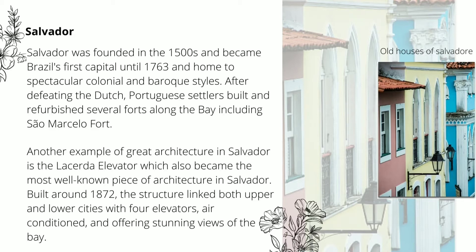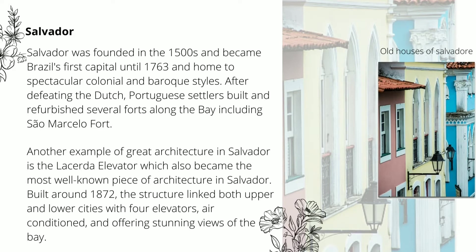After defeating the Dutch in the 17th century, Portuguese settlers built and refurbished several forts along the bay, including Sao Marcelo Fort. The fort stands perfectly round on a small reef bank about 1,000 feet off the coast. A Brazilian writer, Amado, described it as the belly button of Bahia. Another example of great architecture in Salvador is the La Seda elevator, which became the most well-known piece of architecture in Salvador. Built around 1872, the structure linked both the upper and lower cities with four elevators with air conditioning, offering stunning views of the bay.